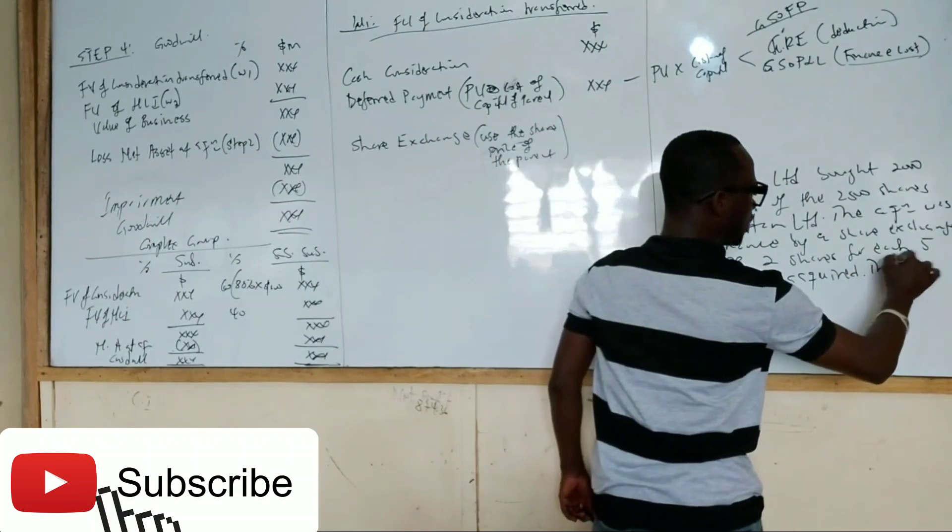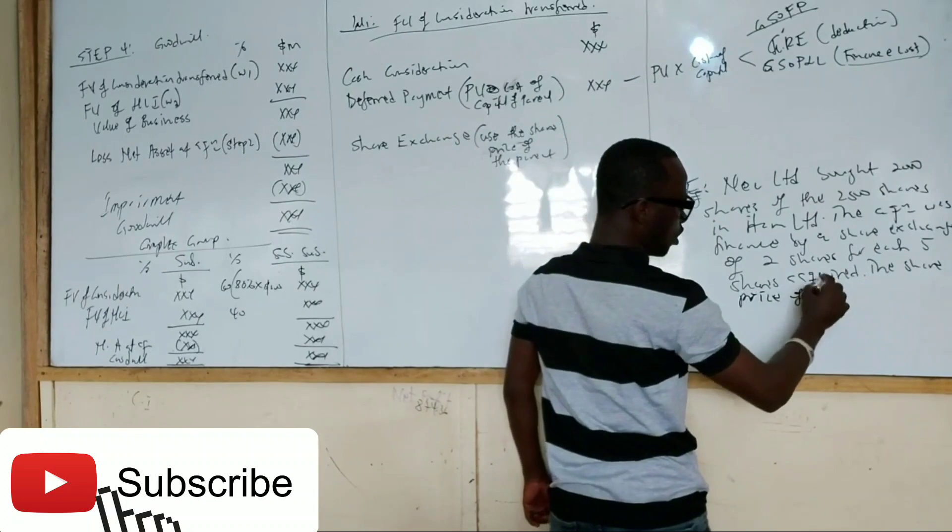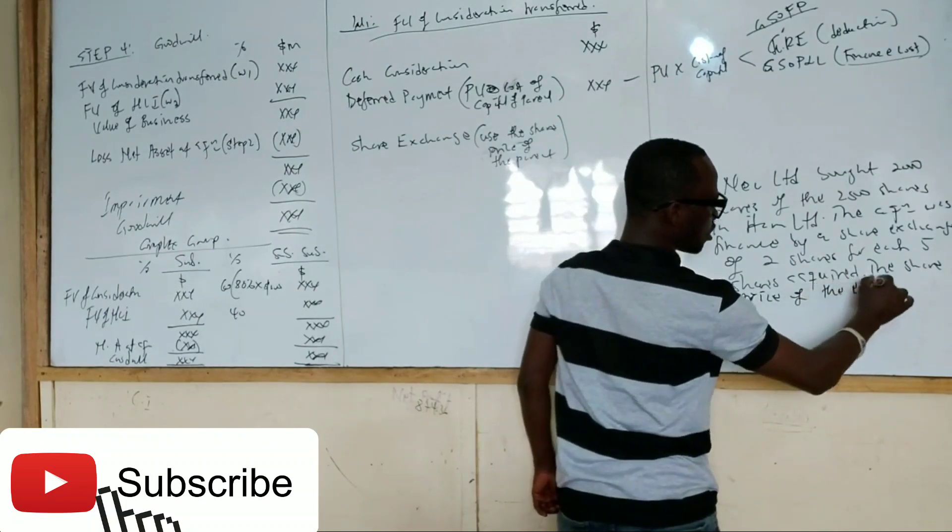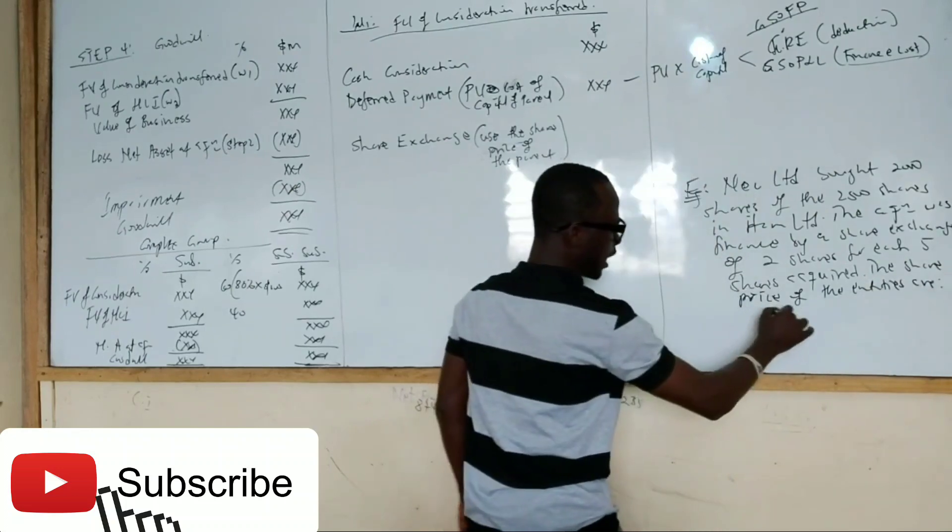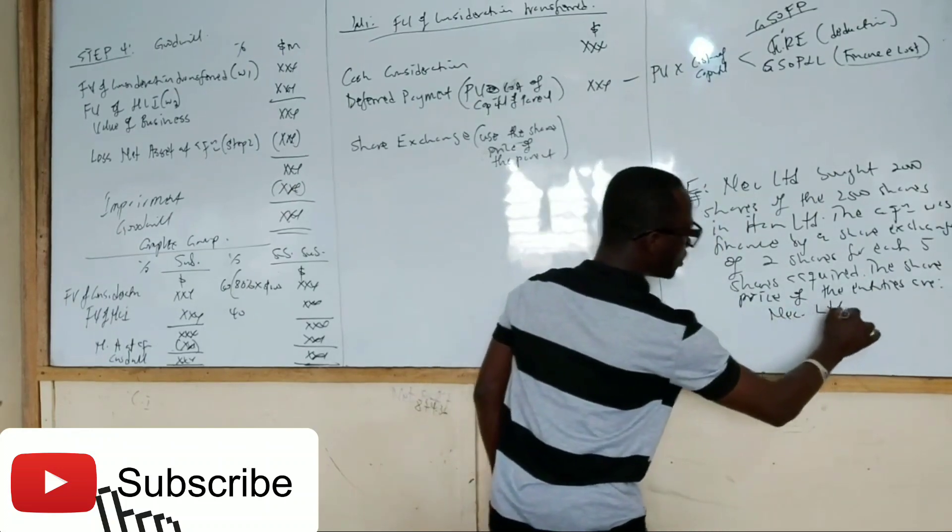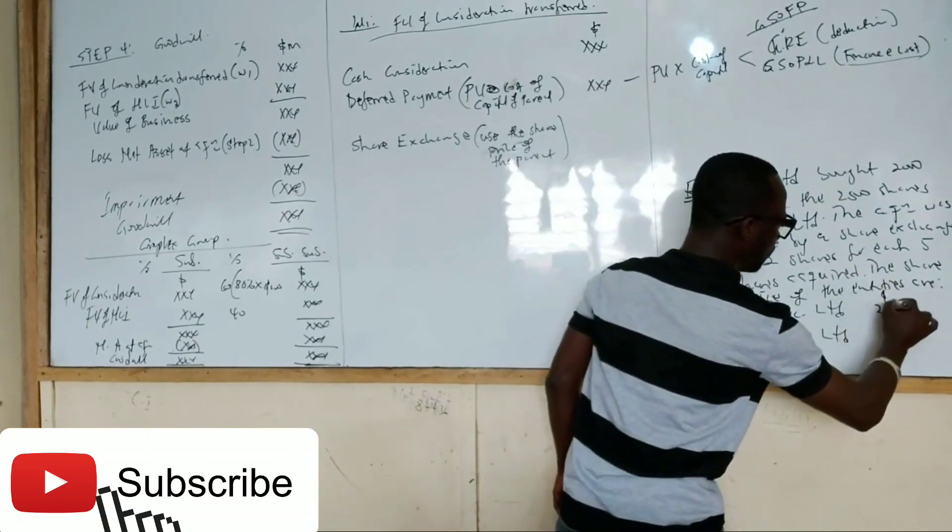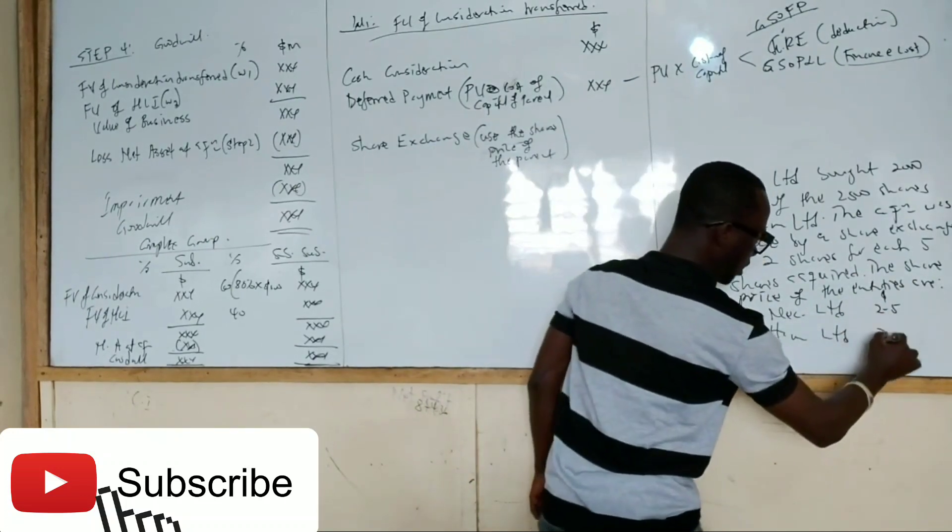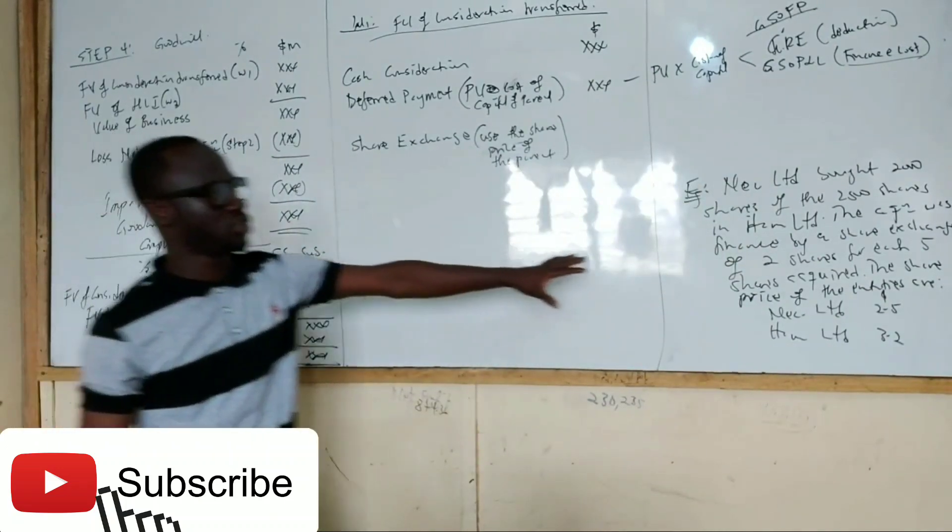Now, the share price of the entities are NEC Limited, HAM Limited. So let's say NEC is $2.5, HAM is $3.2. So this is the illustration we are pulling out.